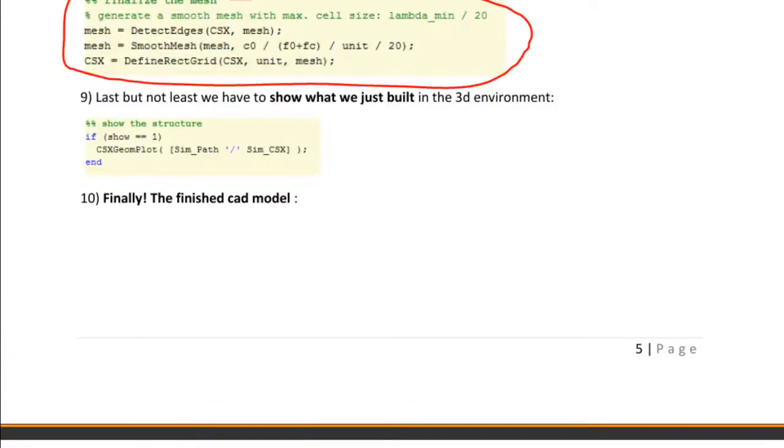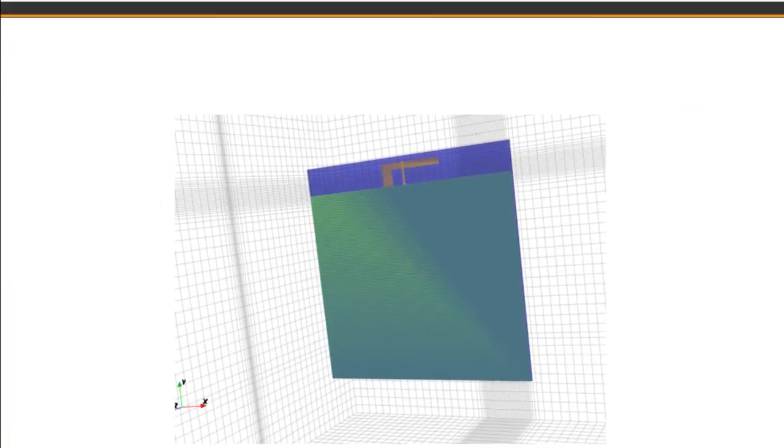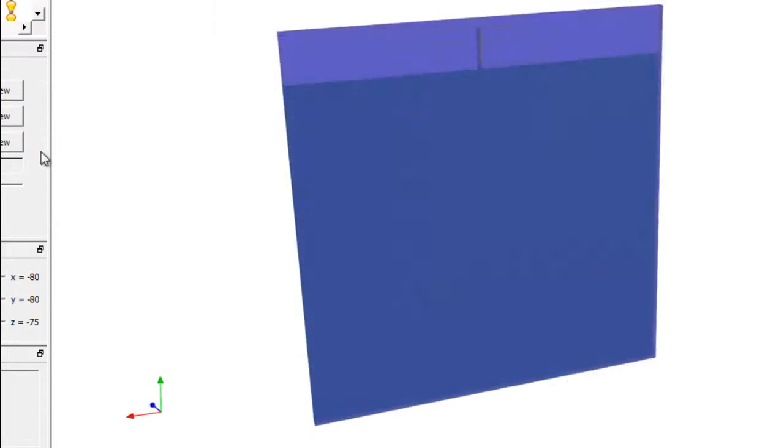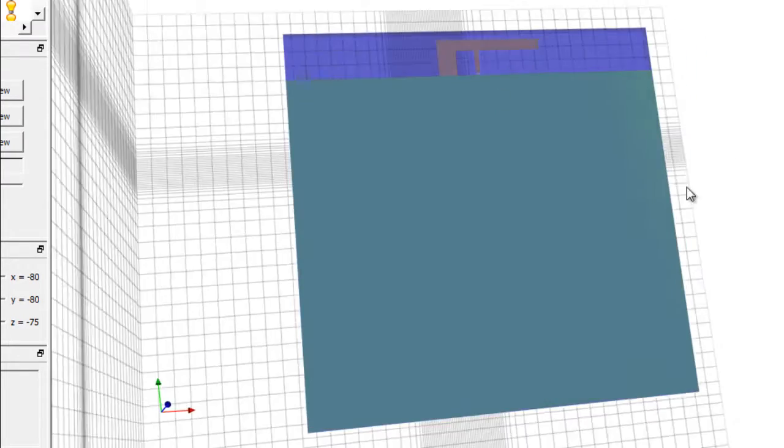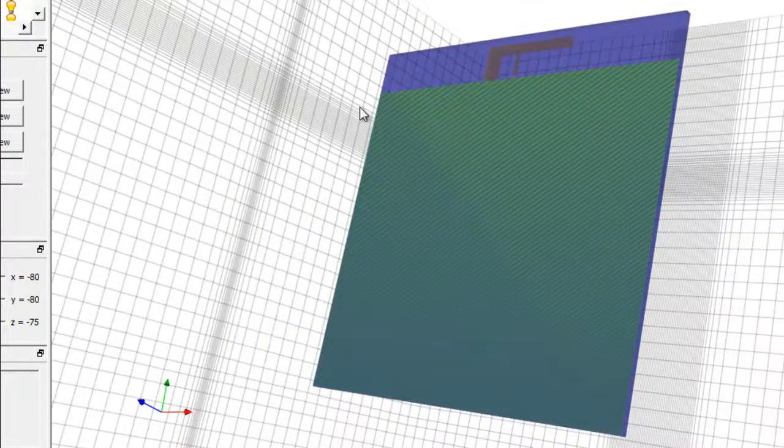When you finish all those initializations, you have to show the antenna itself in the MATLAB environment, and that's done by point number 9. Then, in the end, this is our finished F antenna, all simulated in APP CSX CAD, free software. I can move it around and get an idea of what it's going to look like and how it's going to operate.